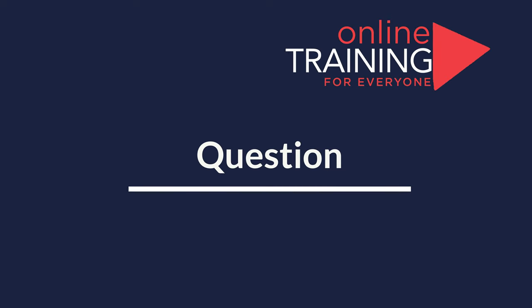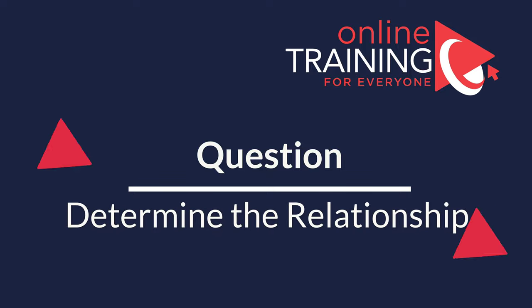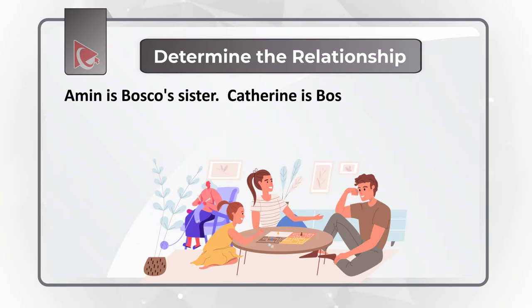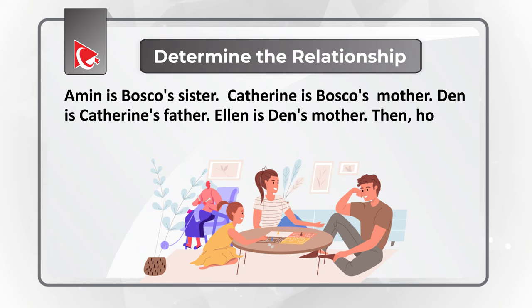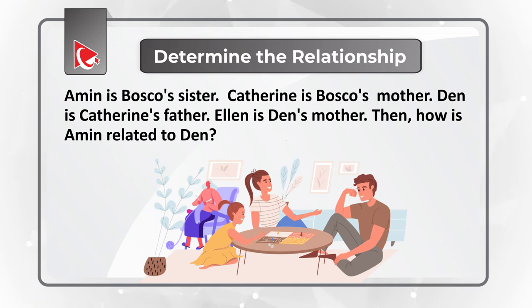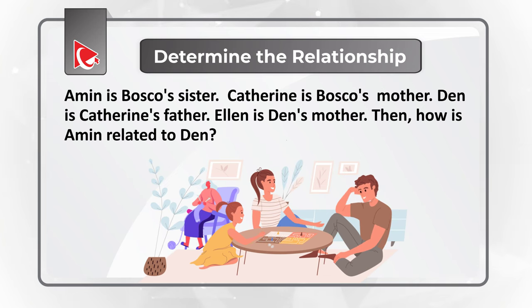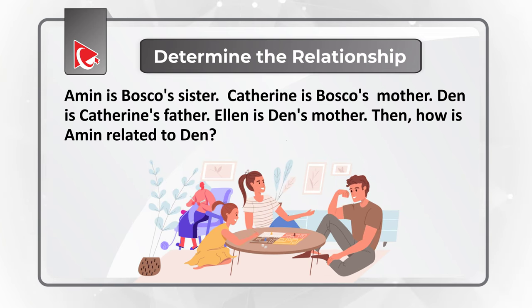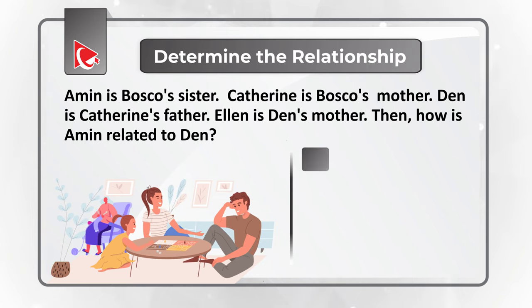Here's an interesting challenge where you need to determine the relationship between family members. Amin is Baska's sister; Catherine is Baska's mother; Dan is Catherine's father; and Alan is Dan's mother. You need to determine how Amin is related to Dan. You have four choices: A: grandfather, B: grandmother, C: daughter, D: granddaughter.